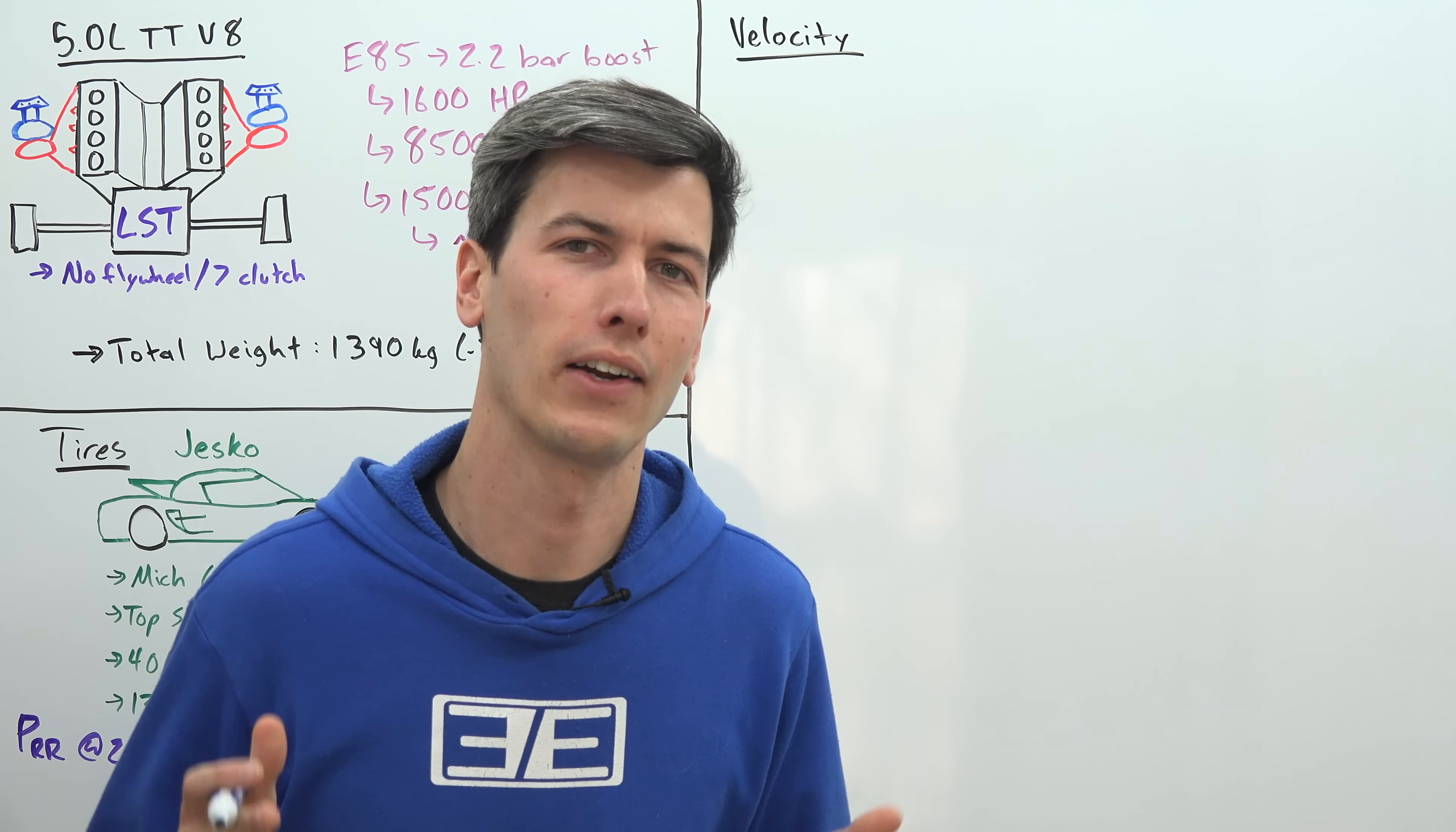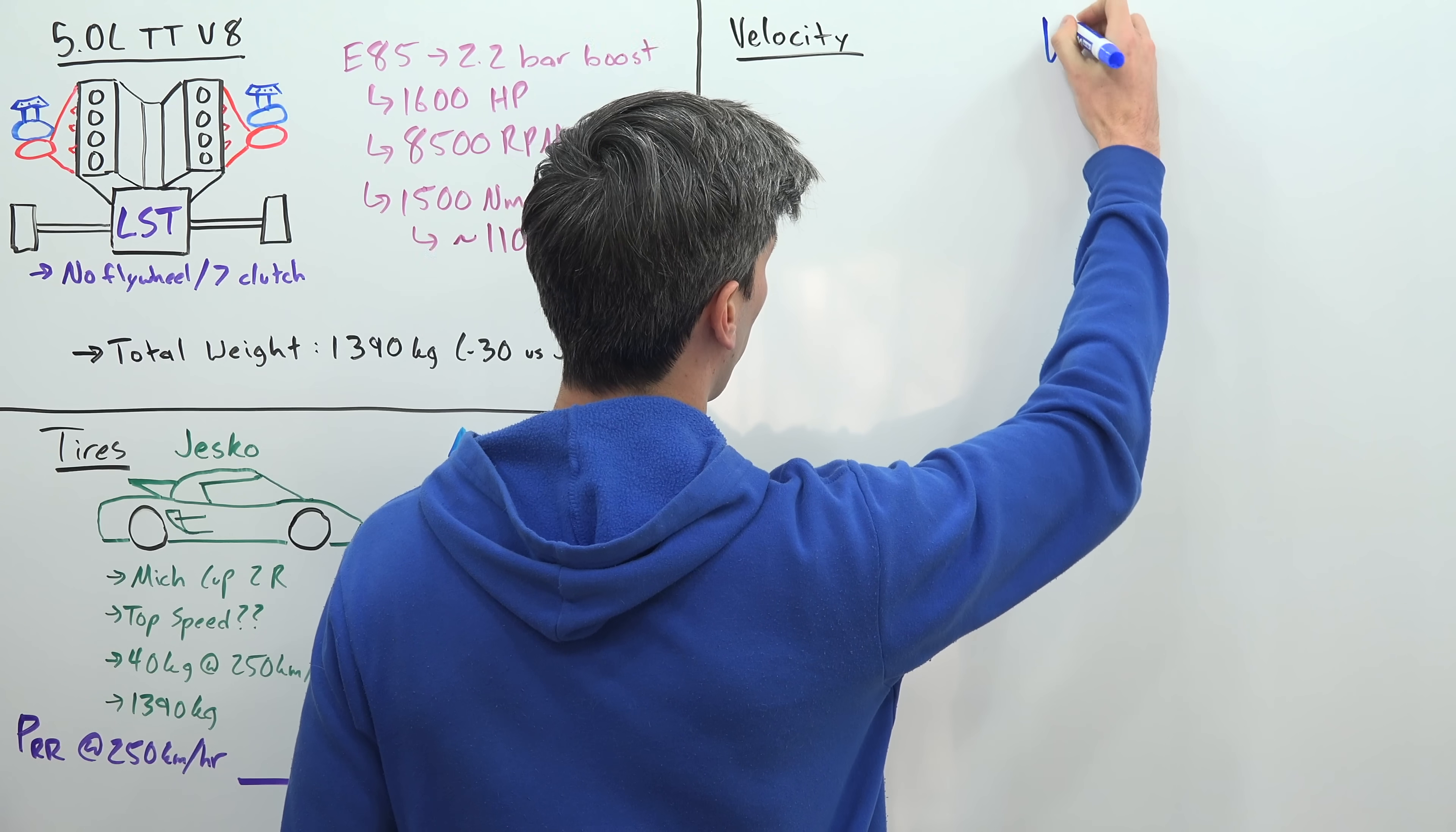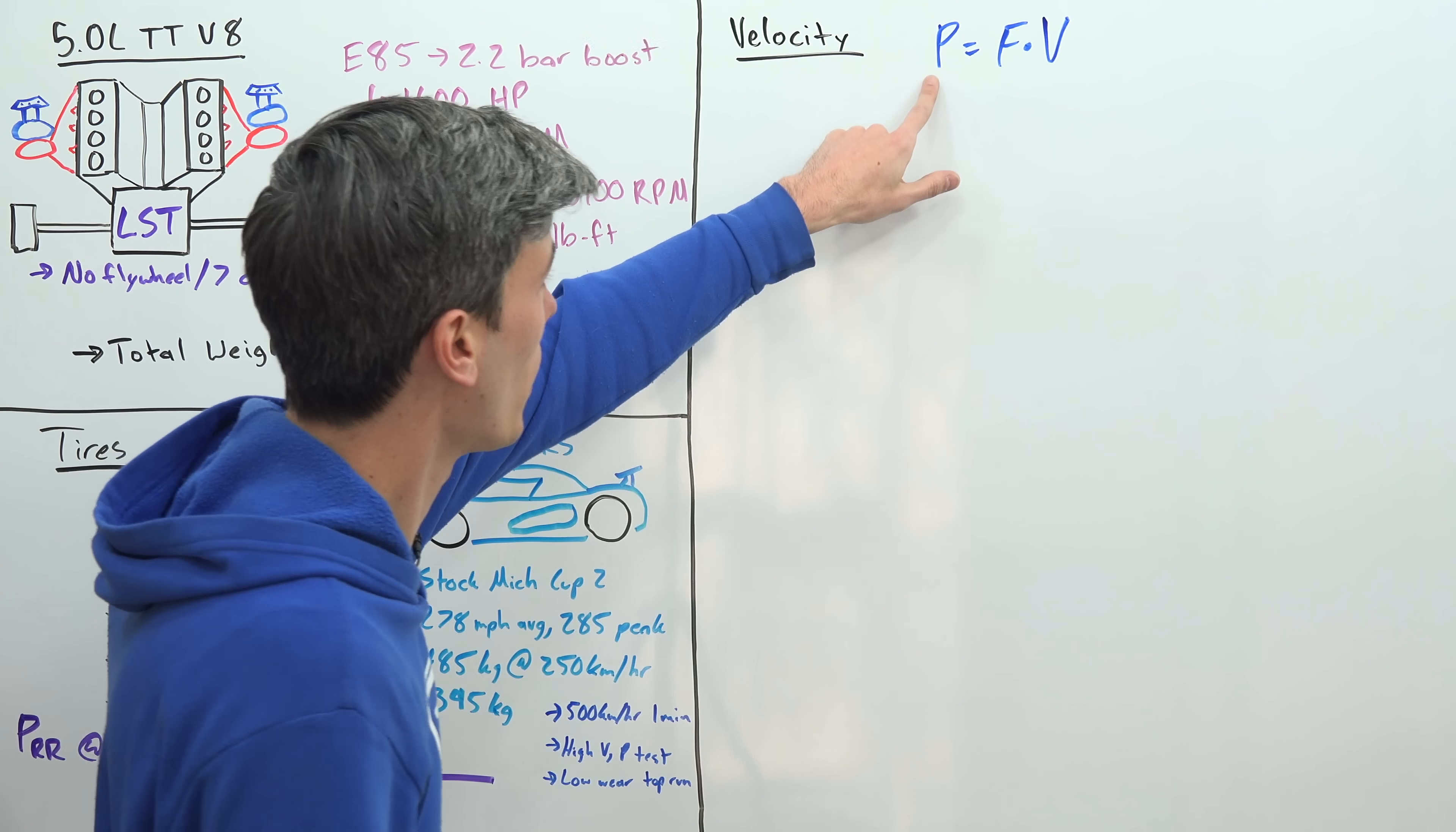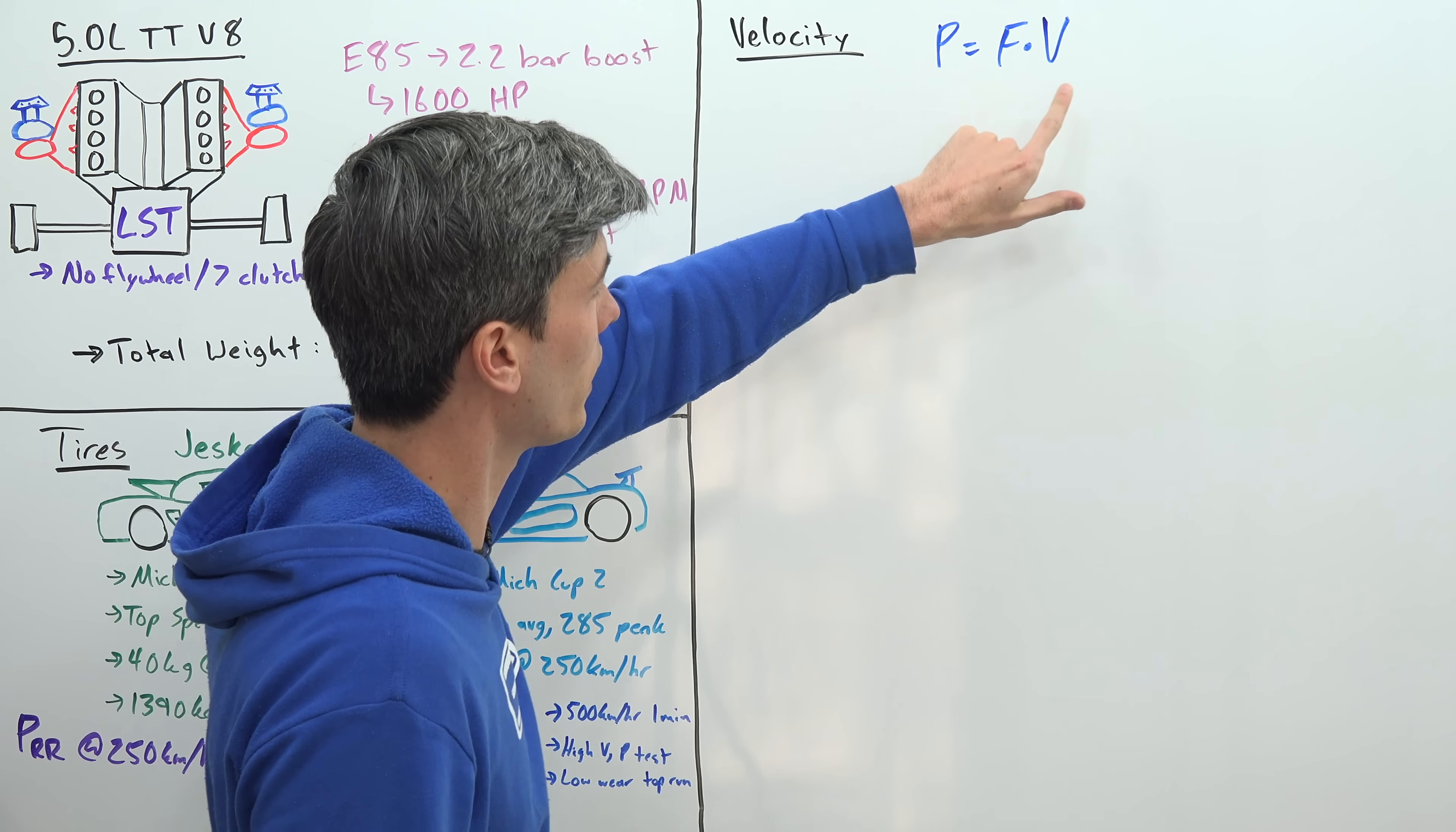Alright, so let's see if we can figure out how fast this thing is going to go. So what are we trying to figure out? We're trying to figure out velocity. So how do we figure out velocity? Well, we know that power is equal to force times velocity. Now that alone doesn't tell us all that much. However, we know how much power we have - we have 1600 horsepower.